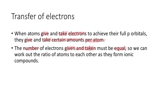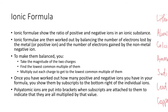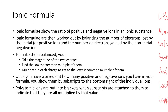So you can't have an atom that gives away three and an atom that takes two and then have those combined together in a one-to-one ratio. What you'd have is a different ratio of atoms so that they have equal numbers of electrons given and taken. And that's what we're going to be looking at today. So ionic formula shows the ratio of positive and negative ions in ionic substances.